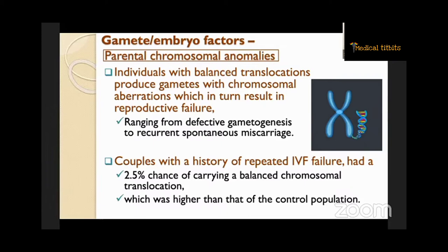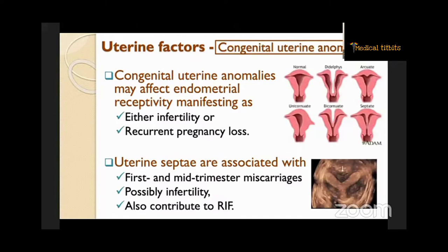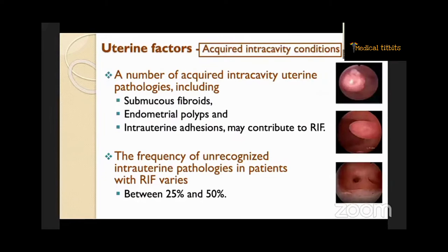When it comes to uterine factors, the main consideration is congenital anomalies. Congenital uterine anomalies may affect endometrial receptivity, manifested as either infertility or recurrent pregnancy loss. Uterine septa are associated with first and mid-trimester miscarriages, possible infertility, and also contribute to RIF. Among acquired intracavitary lesions, a number of uterine pathologies including submucous fibroids, endometrial polyps, and intrauterine adhesions may contribute to RIF.